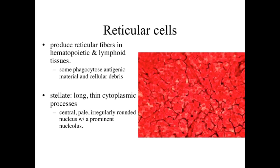Occasionally they could phagocytose some antigenic material or cellular debris, but in general there are going to be other cells involved with that. The reticular connective tissue cells are generally going to be very, very difficult to identify. In a hematoxylin and eosin-stained section, it's going to be almost impossible — you'll use some specialized stains or electron microscopy. But if you were able to see them, you'd see that they're stellate cells — they look kind of like little stars. They're going to have long, thin cytoplasmic processes that extend out and interact with reticular fibers. They'll have a central, relatively pale, irregularly rounded nucleus with a prominent nucleolus, because they're involved with synthesizing and secreting proteins for establishing the reticular fiber network.